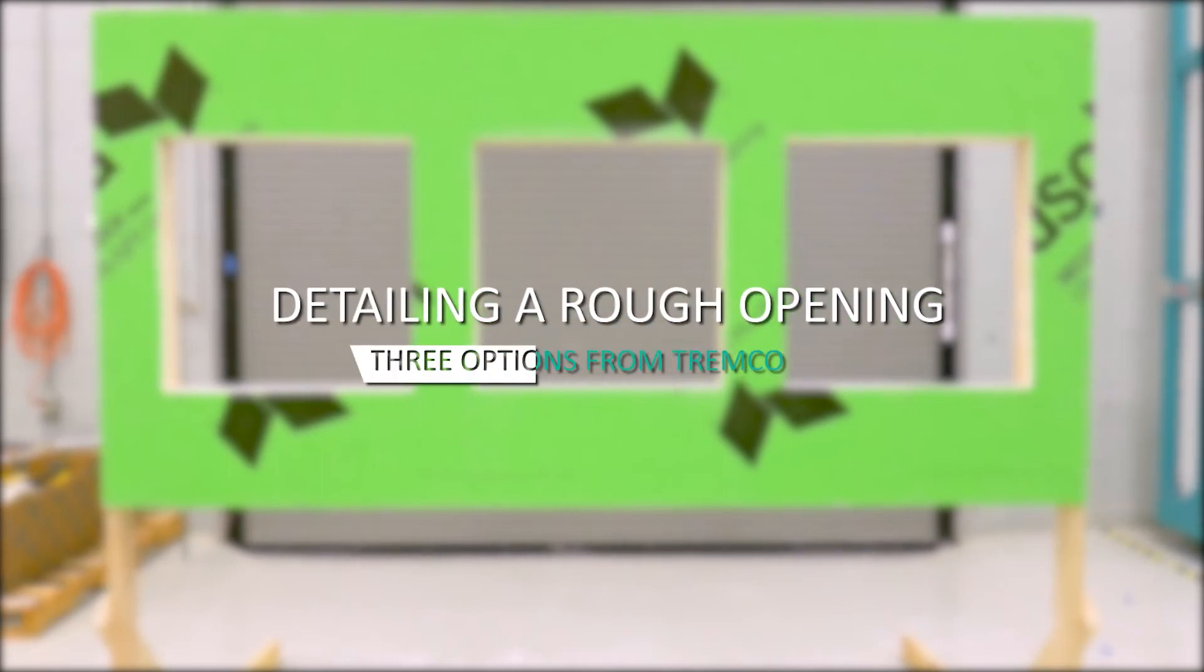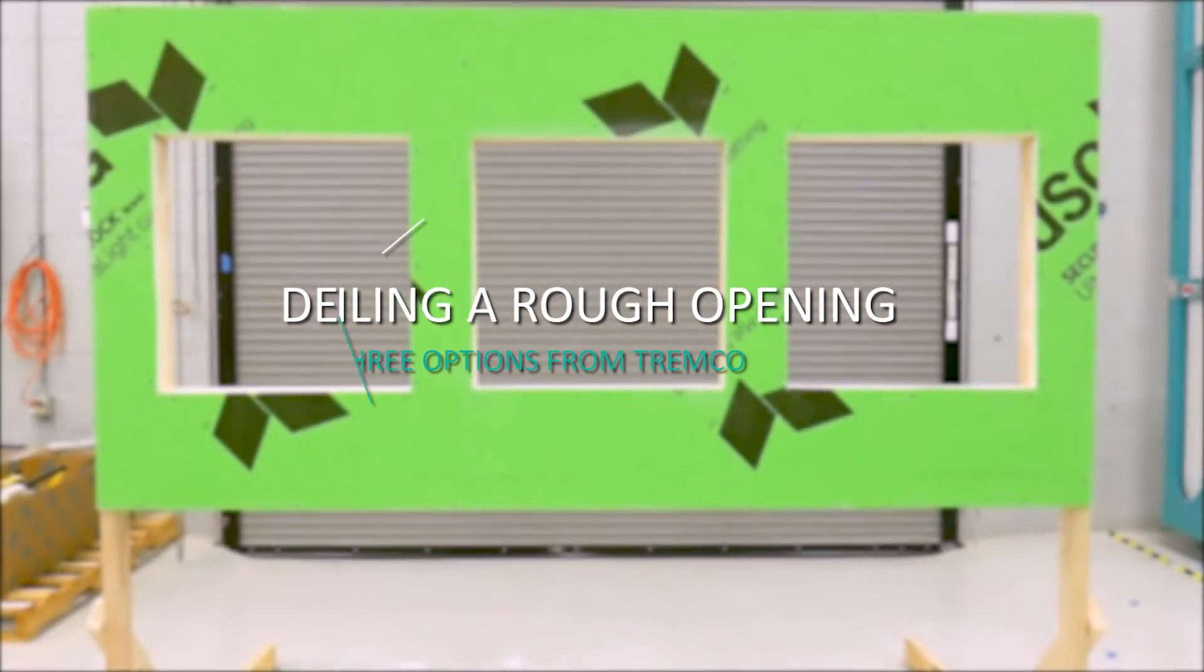To properly flash a rough opening on your wall assembly, Tremco recommends one of the following three options.